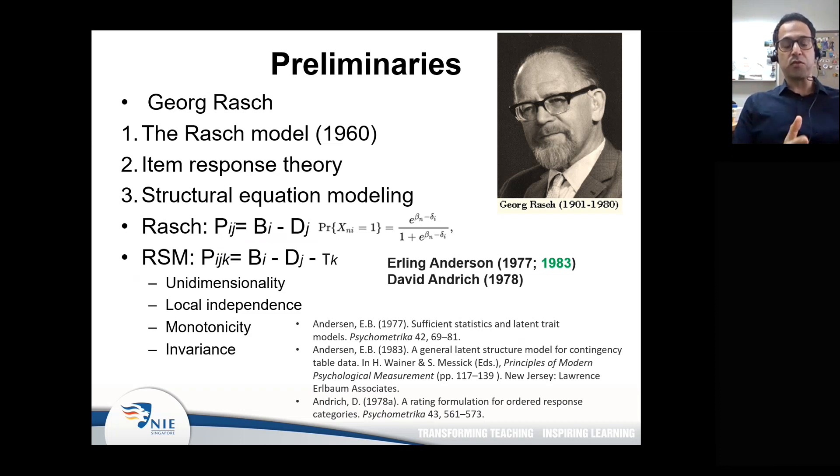There's another group of models known as item response theory, which was being developed around the same time as Georg Rasch was working on his own model in different parts of the world. Also, another family of models by the name of structural equation modeling were also being developed around the same time. Different people were working on similar models for a variety of purposes around the same time in different parts of the world, and this coincidence is really very interesting to me.